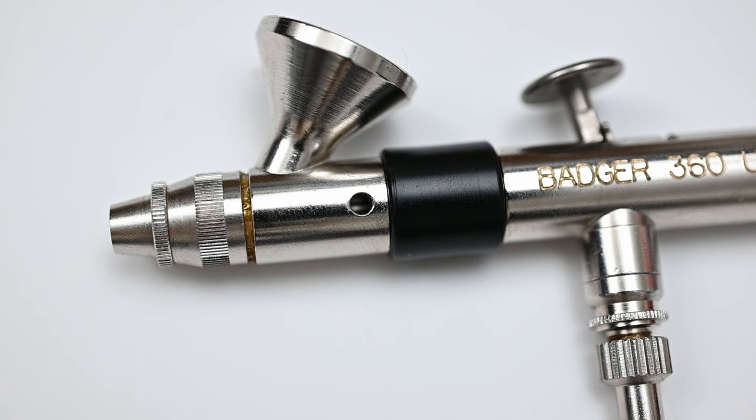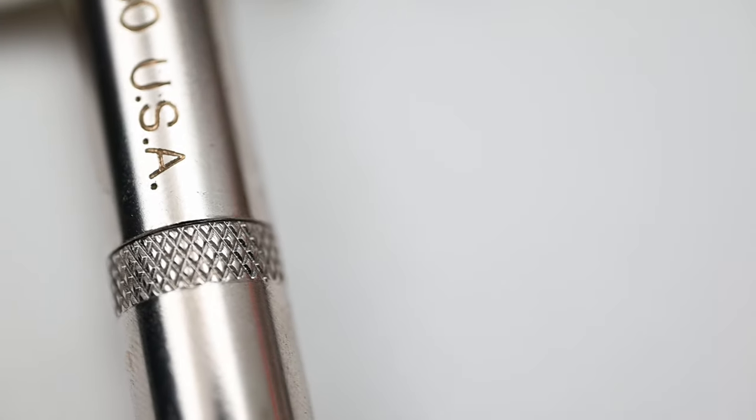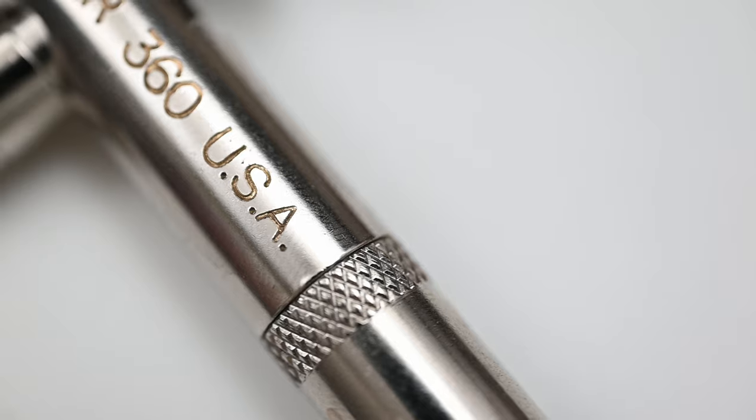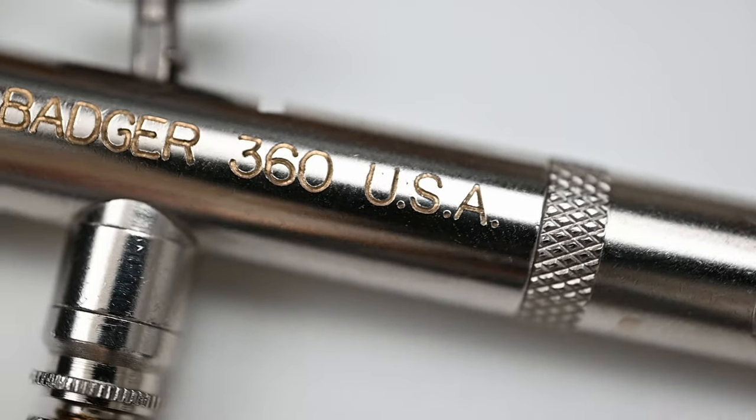The gravity-fed cup on top of the airbrush is pretty small. It holds around 20 drops of paint, which is about one and a half milliliters. I think this is a great size for the paint cup because if you want to spray a good amount of paint, you're going to be using the siphon-fed jar anyway.